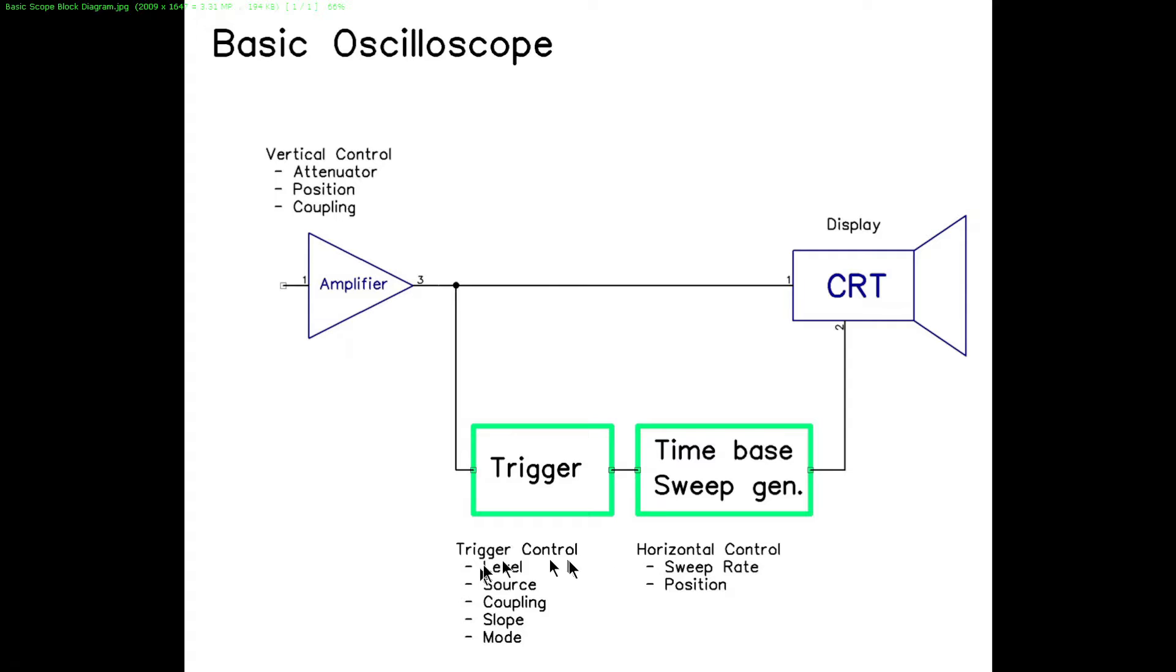All scopes share these same basic functions, just these four of them: vertical control, trigger control, horizontal control, and display. Some more modern scopes have far more functions, but we're not going to get into that. This is a basic course here.